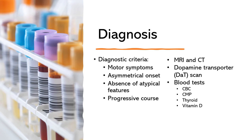Thyroid function tests, such as thyroid-stimulating hormone, free T4, or free T3, might be ordered to assess thyroid function. Hypothyroidism can sometimes present with symptoms that overlap with those of Parkinson's disease, so ruling out thyroid dysfunction may be important. Some studies have suggested a possible link between low vitamin D levels and Parkinson's disease, although the exact nature of this association is still being investigated. A trial of levodopa, a medication commonly used to treat Parkinson's disease, may be initiated to assess the response of motor symptoms, and this can be supportive of a Parkinson's disease diagnosis if there is a significant improvement in symptoms.